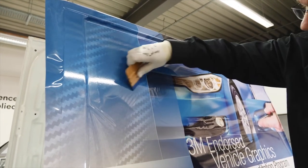If wrinkles appear, apply heat and let the film cool down, then continue squeegeeing with overlapping strokes.